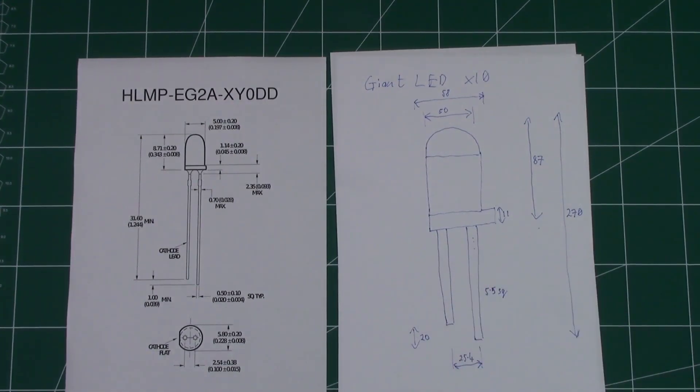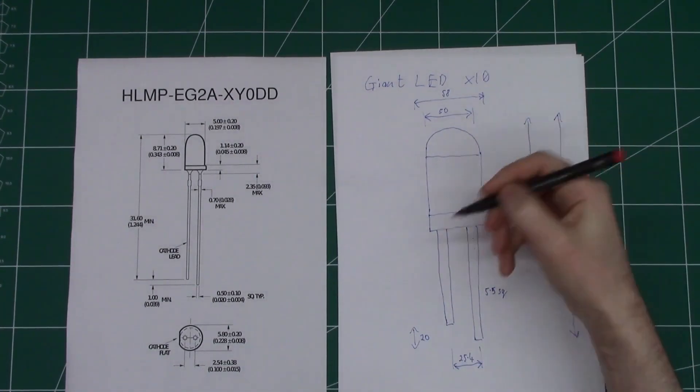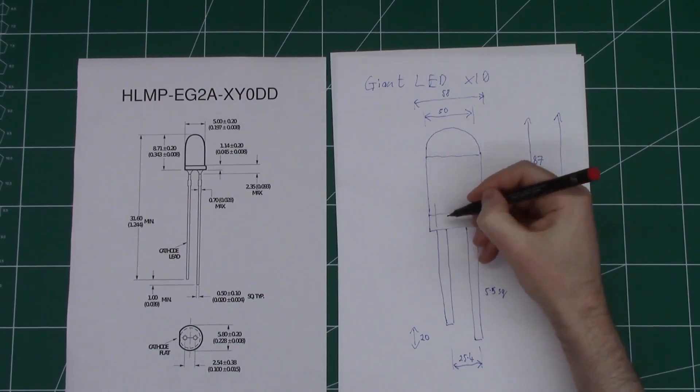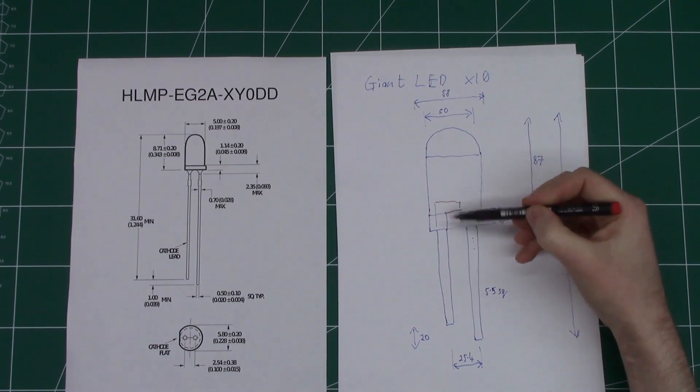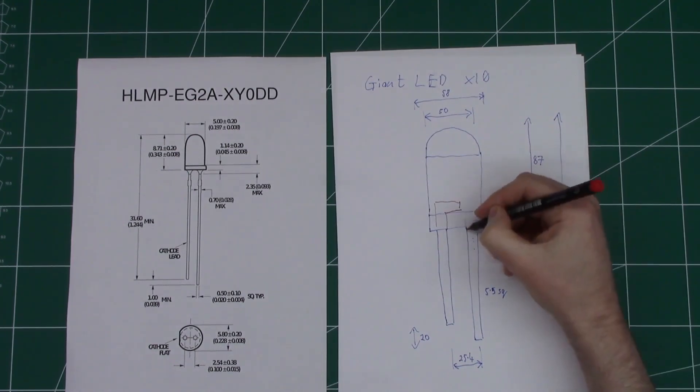There's also some internal details inside the LED which I'm not really going to go into in a huge amount of detail. There's an anvil shape that I've chosen to put onto the cathode, and then the anode has a slight shape like that.